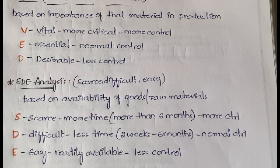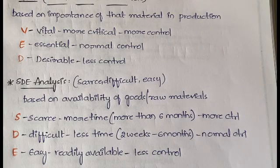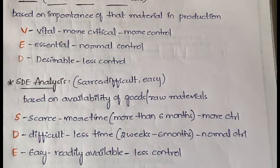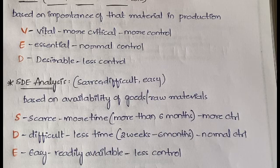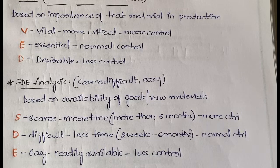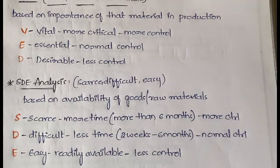D stands for Difficult — you can obtain these materials within two weeks to six months. They require normal control. E stands for Easy — these materials are readily available in the market; you don't need to wait or go anywhere to get them. Easy materials require less control compared to the other two categories.